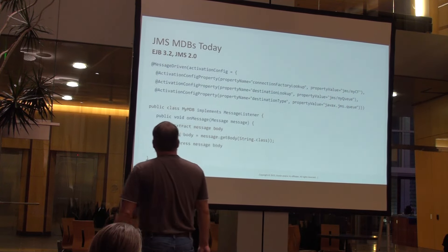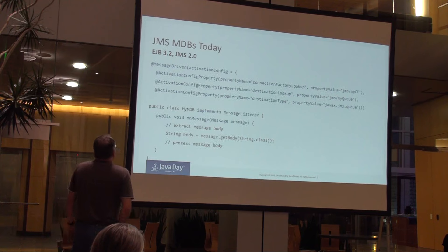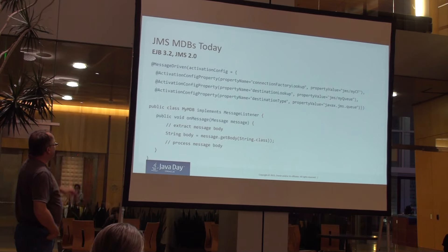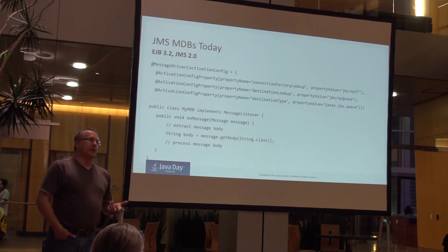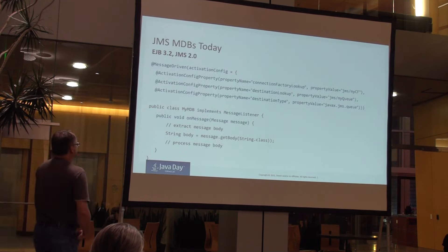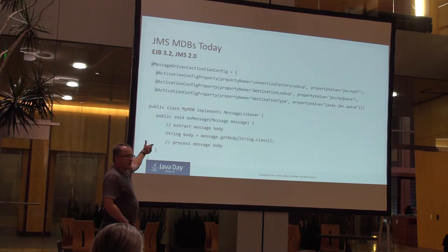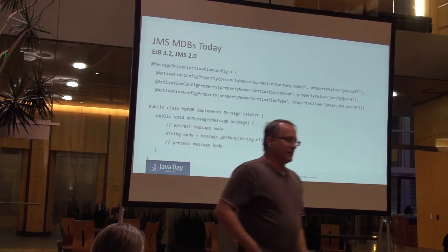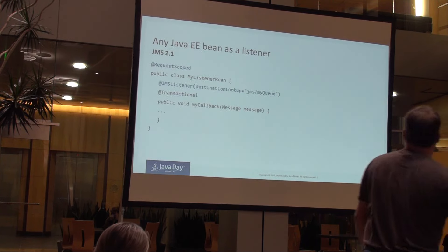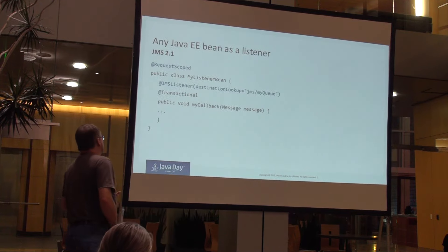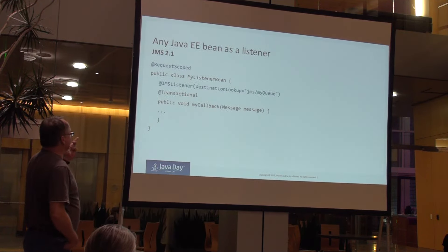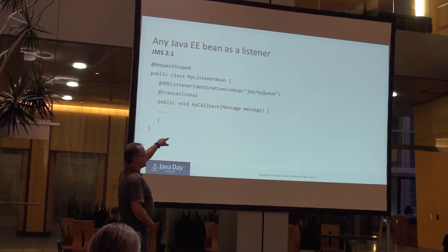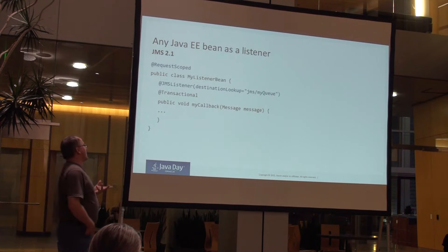Here's an example of JMS message-driven beans today: you have to define a set of properties to specify which queue to listen on, and then implement a message listener interface providing the onMessage method invoked whenever a new message comes on the queue. They're looking to simplify that down to a plain Java class with a @JMSListener annotation on a method — whenever a message comes across the queue, just invoke this method. Less configuration, as simple as possible.